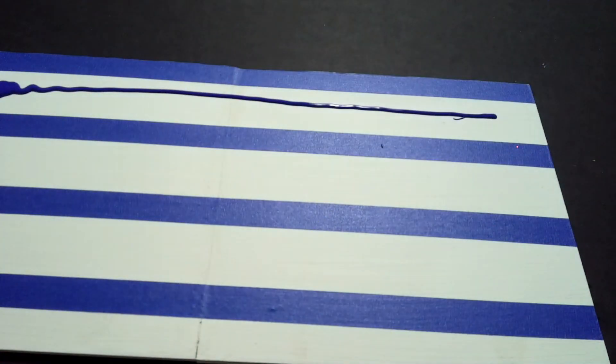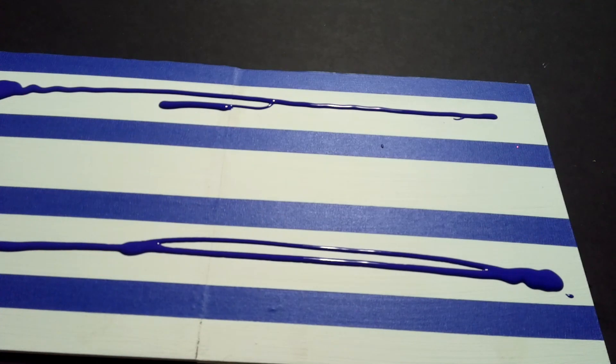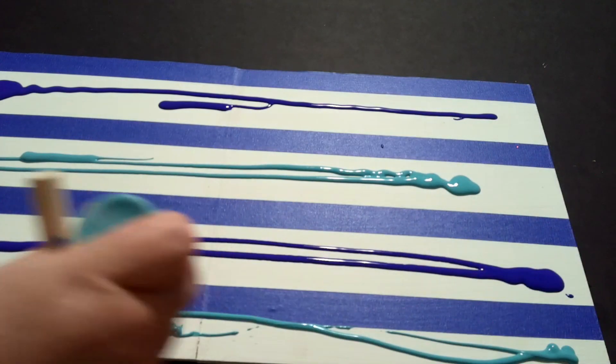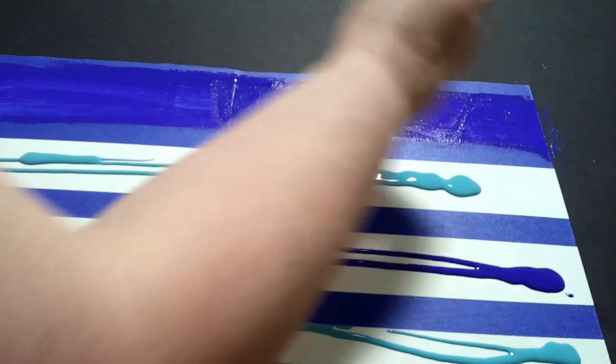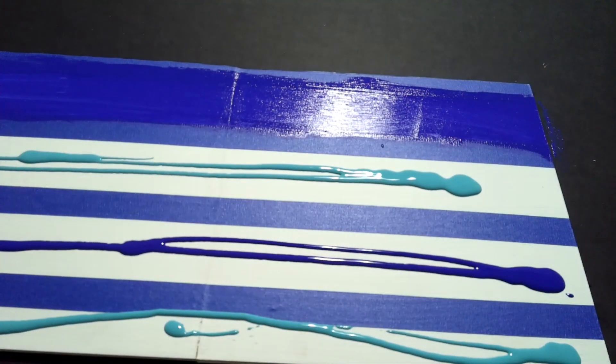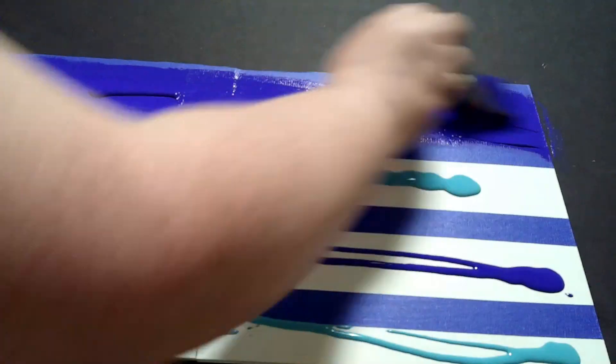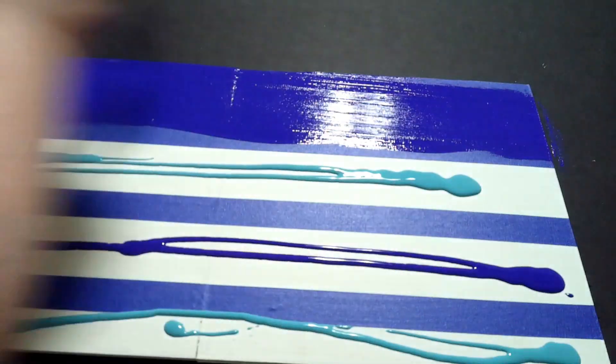This is what our piece looks like with the painter's tape on it. Now we're going to take our blues and put them on the white lines that's showing. I'm going to take a foam brush and give it a nice good even coat with our blues.